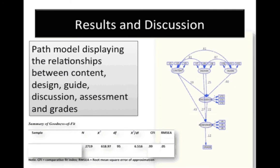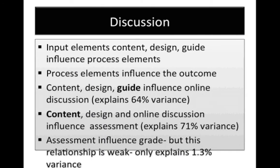The results show that the three input elements — content, design, and guide — only had an indirect effect on grades. Direct path coefficients between content-grade, design-grade, guide-grade, and discussion-grade were very weak and did not reach statistical significance. In summary: input elements influence process elements, and process elements influence the outcome. Guide had the strongest influence on online discussion, and the three input elements explain 64% of the variance in online discussion. Content, design, and online discussion influence assessment and explain 71% of the variance in assessment. Assessment seemed to influence grade, but this relationship was weak, explaining only 1.3% of the variance.